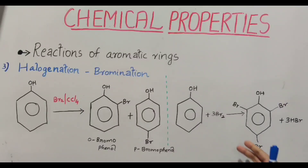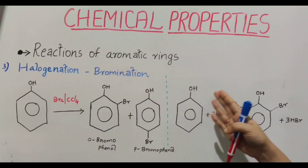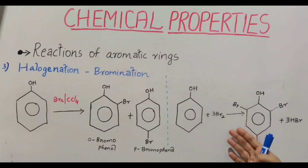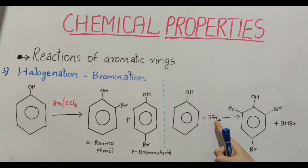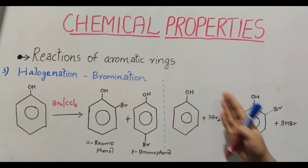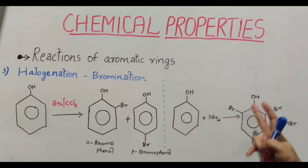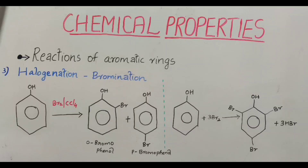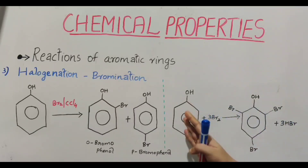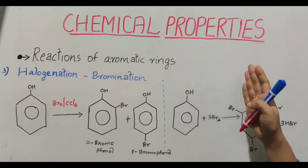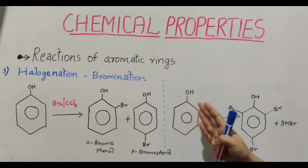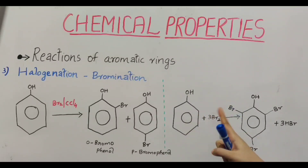It is by reacting phenol with halogen — here bromine. It is bromination. Phenol when treated with bromine, we are getting 2,4,6-tribromophenol. As we all know, OH is an activating group. It is halogenation of phenol.